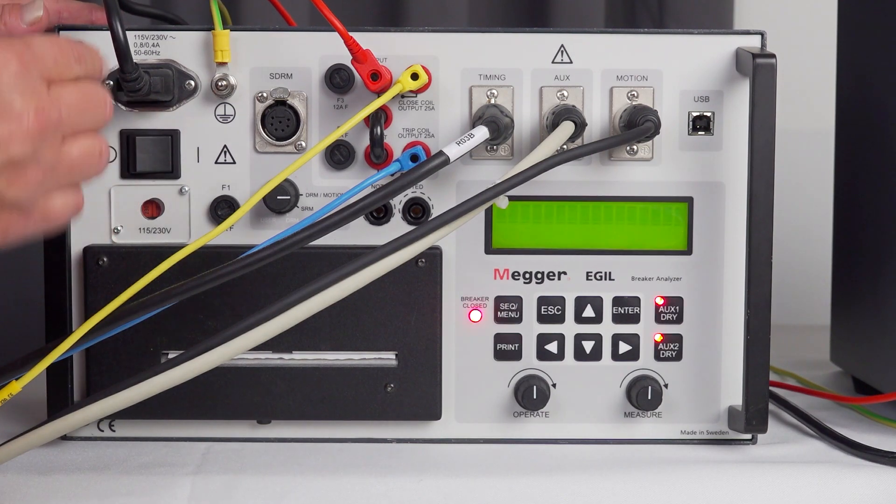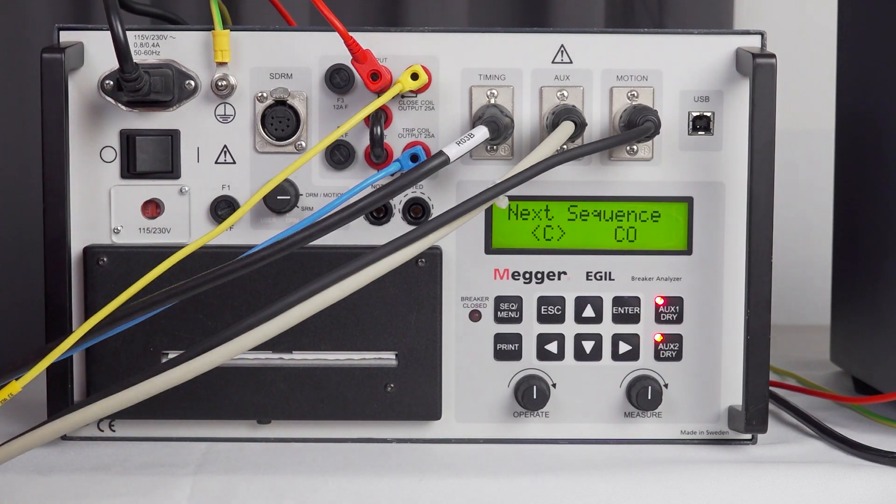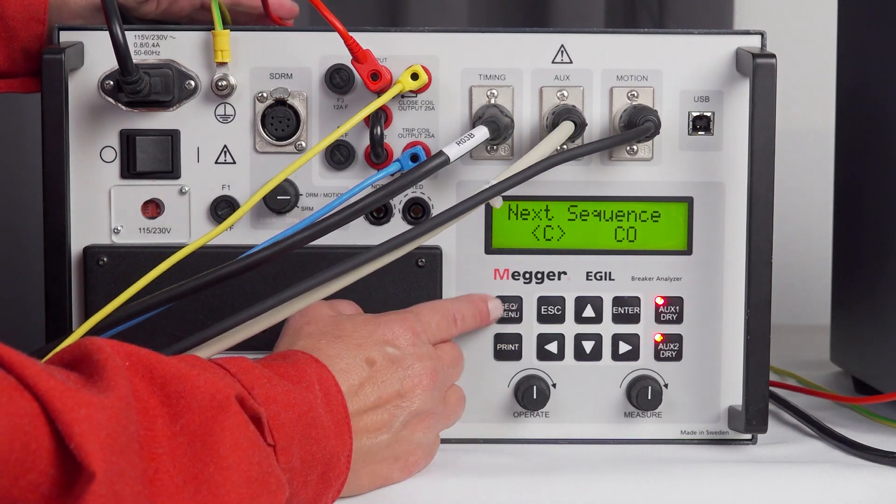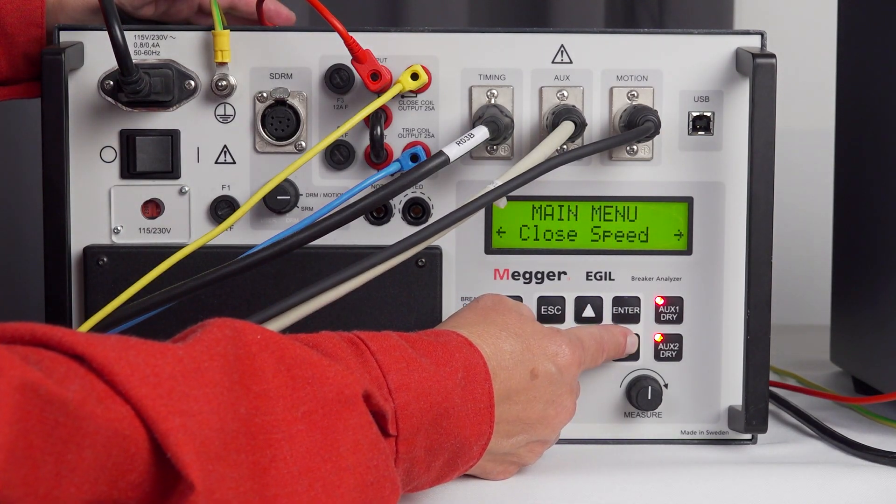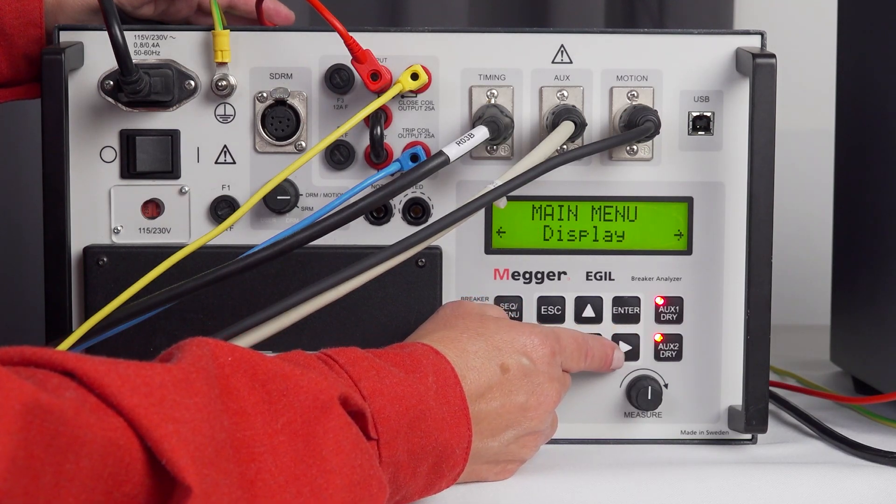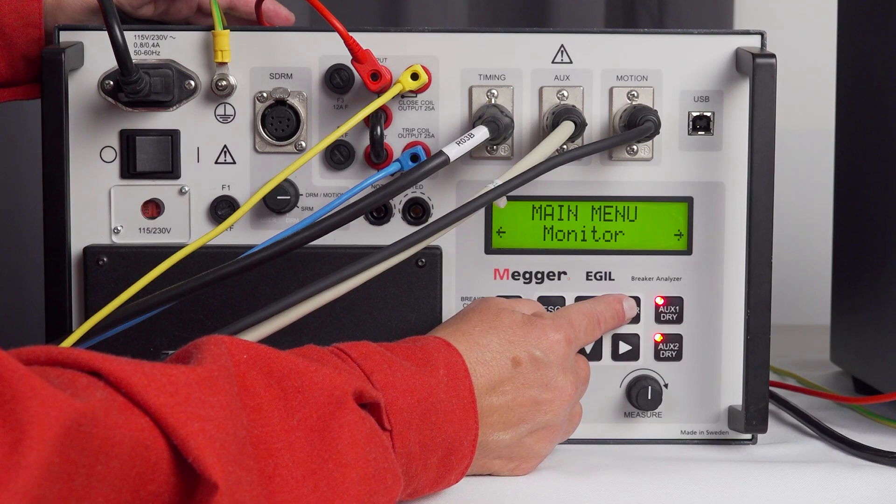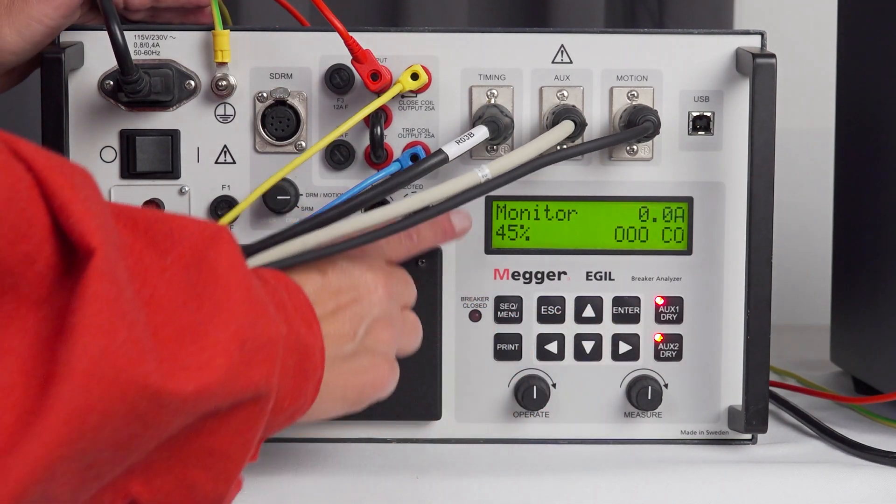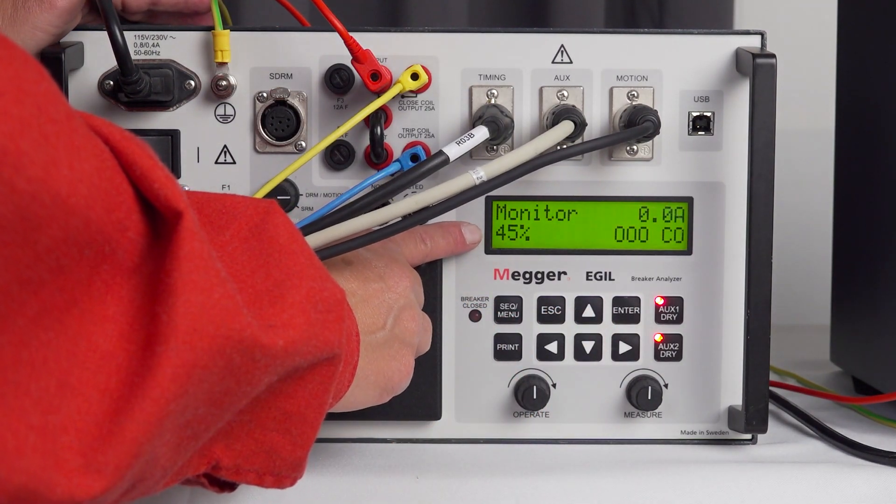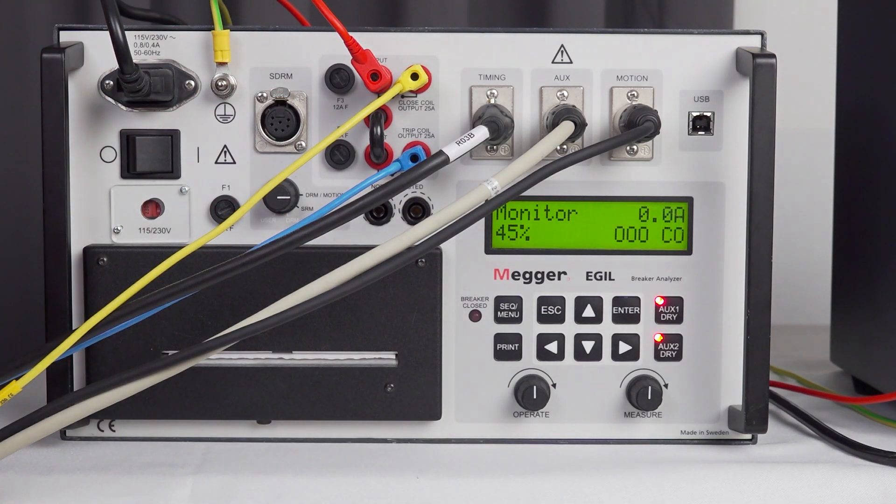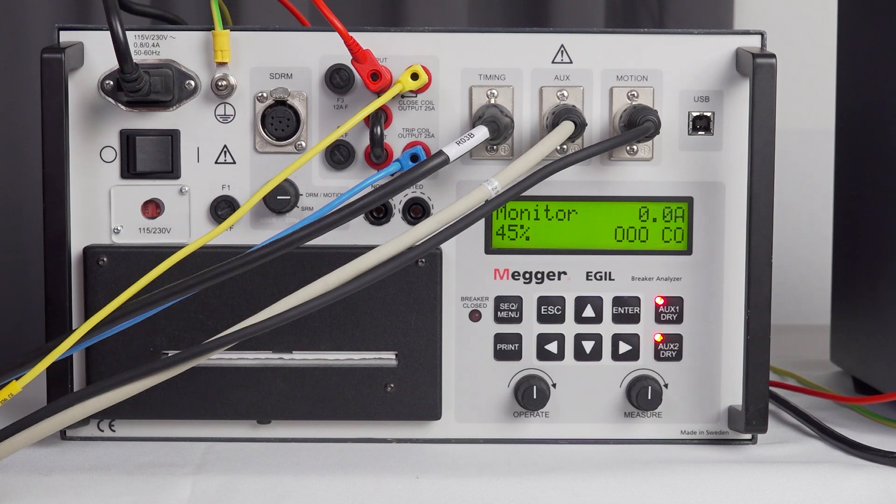I turn on the instrument to check that the transducer is in correct position. I go to menu and I move to monitor. Here I can see that the transducer is on 45%. I need it to be between 40 and 60%. And if it's not correct, I need to loosen the flex coupler again and turn the transducer a little bit so it is in this region. That is because the transducer has a gap and we want to avoid that gap during the measurement.